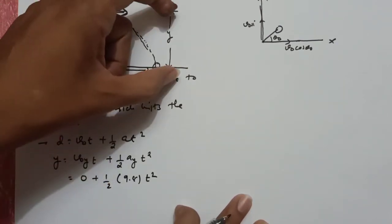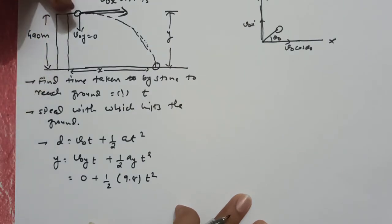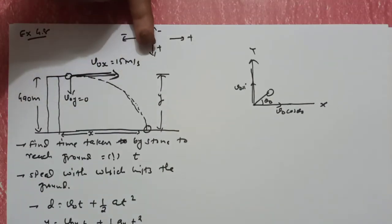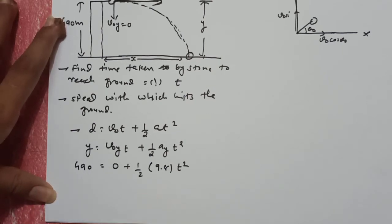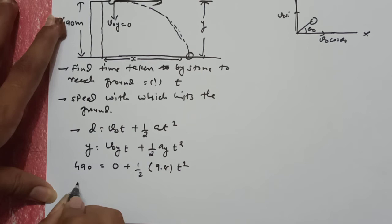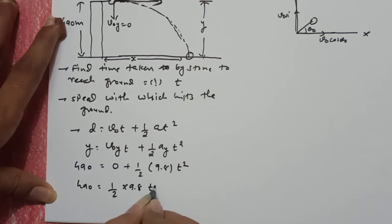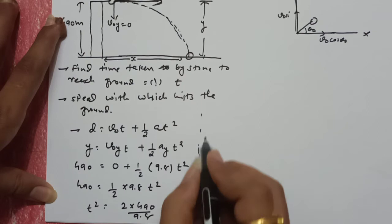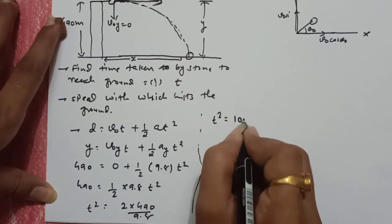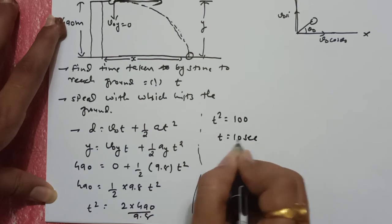तो R1 is equal to V0 square, sin 90 minus 2 theta by G. अब यह जो Y axis का distance है, यह 490 है। यह distance नीचे की side में cover हो रहा है, और नीचे की direction को हमने positive लिया है, तो यह distance 490 भी positive जाएगा। So 490 is equal to 1/2 into 9.8 T square. So T square is equal to 2 into 490 by 9.8. T square is equal to 100, so T is equal to 10 seconds।